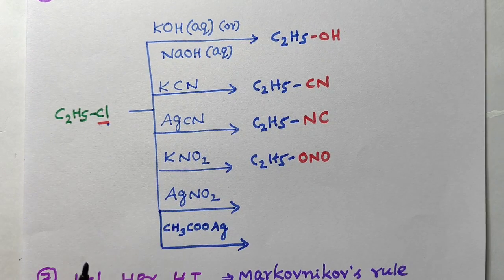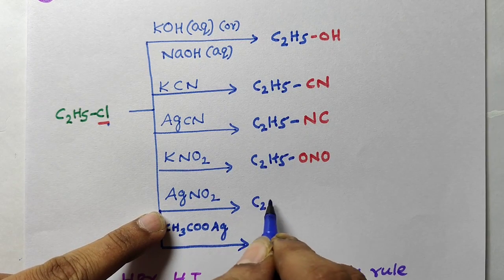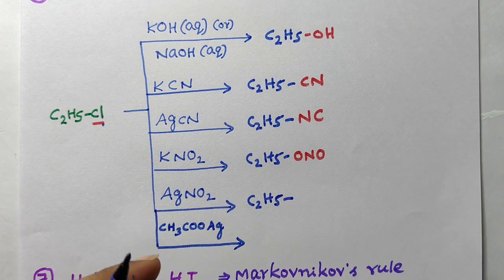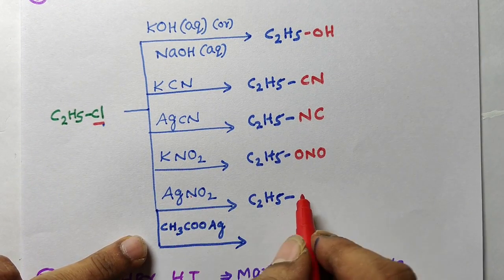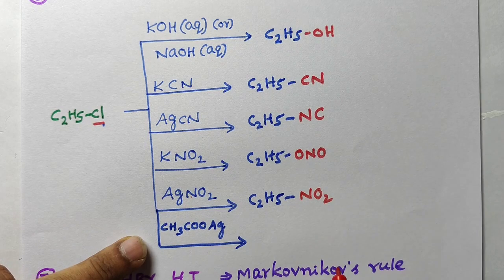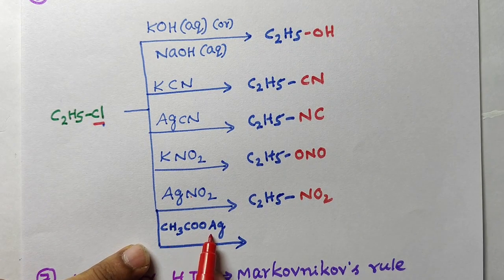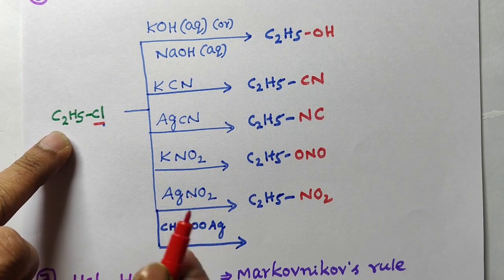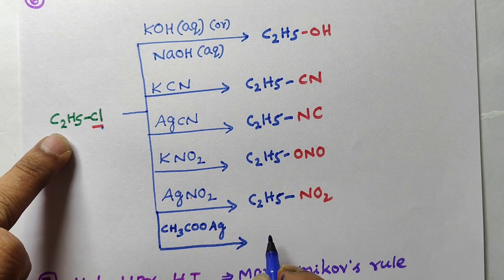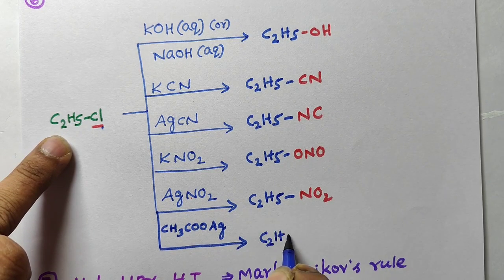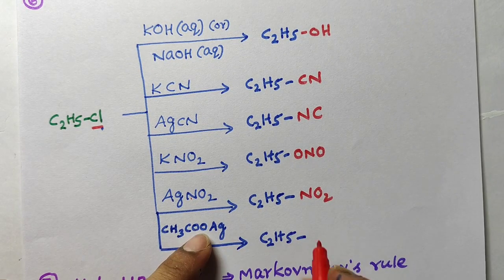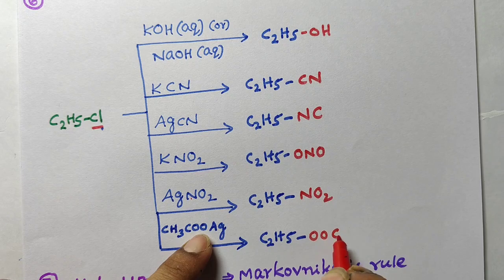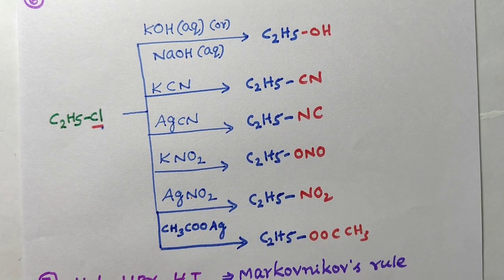Next: AgNO2. If you take AgNO2, nitrogen is the attacking site, so NO2 is attached — nitroethane is formed. And if you take CH3COAg, silver acetate, oxygen is the attacking site. So you get C2H5-O-CO-CH3 — ethyl acetate is formed.